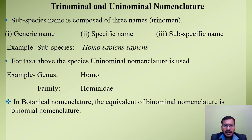In ICZN, trinominal and uninominal nomenclature are also used. Trinominal nomenclature is used for the subspecies level — the name of a subspecies is composed of three names: generic name, specific name, and subspecific name. For example, the subspecies of human being is Homo sapiens sapiens. For taxa above the species level, uninominal nomenclature is used — for example, the genus Homo and the family Hominidae are single names, hence uninominal.